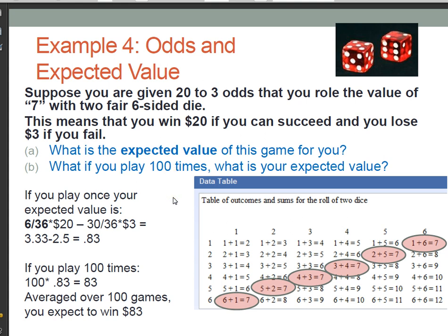In this example, we're talking about odds and expected value. A lot of you may be new to the concept of odds, so I wanted to go through this example in a little bit more detail, and we've got some good pictures here as well. Here's the problem. Suppose you are given 20 to 3 odds that you roll the value of 7 with two fair six-sided die.